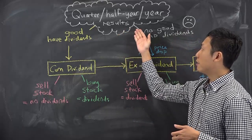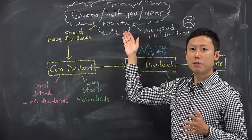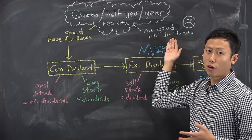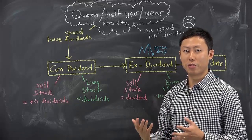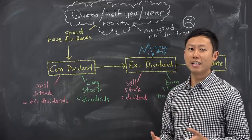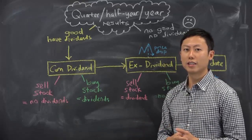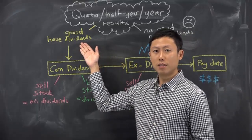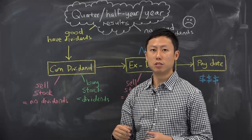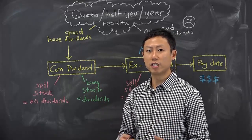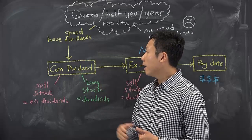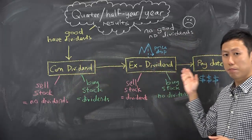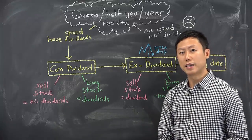So let's say the results are not good — the company management may decide not to distribute the dividends. As a shareholder, you're not very happy about it, but at the end of the day, it is up to the management's decision. Let's assume the results are good; the management will likely declare a particular dividend to be given, and a series of dates — cum dividend date, ex-dividend date, and pay date — will be announced.